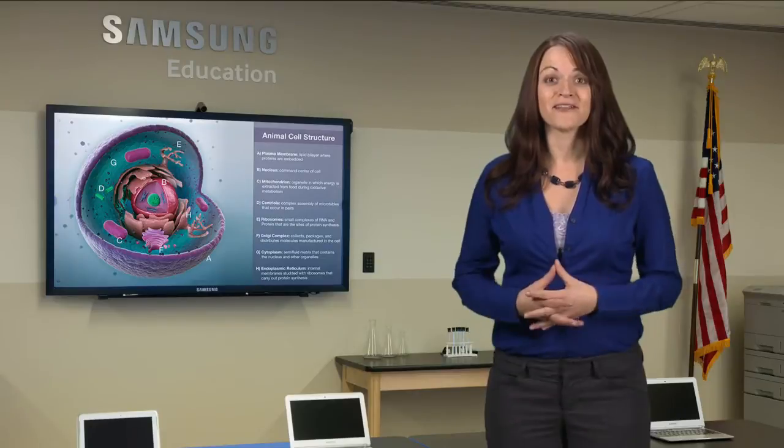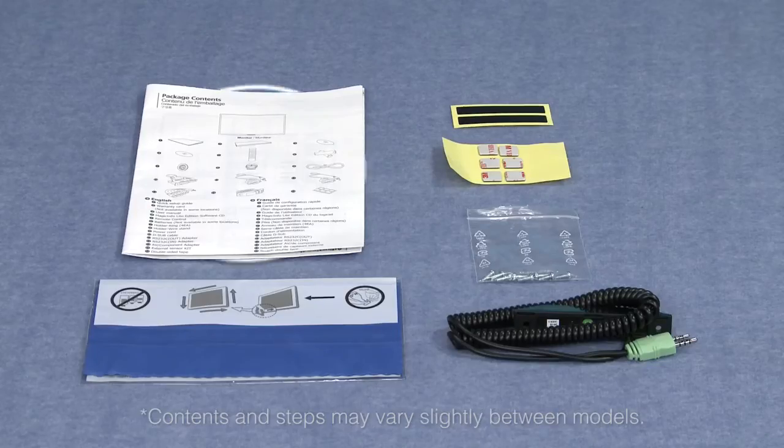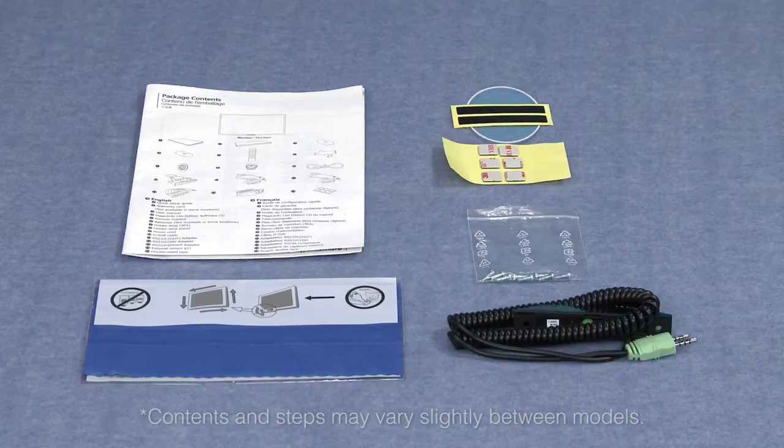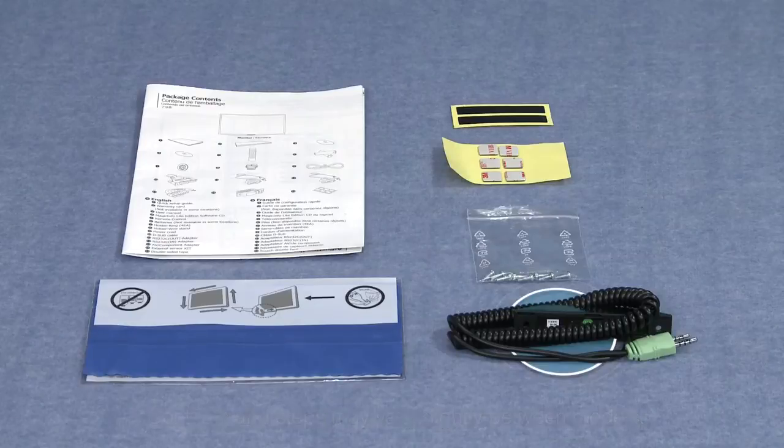So let's get started on the installation. In the box, you'll find an installation guide, a cleaning cloth, a sticker to cover the logo, double-sided tape, screws, an external sensor kit, and the overlay.